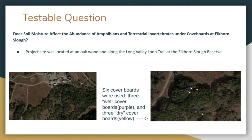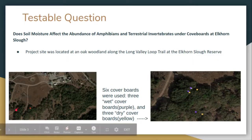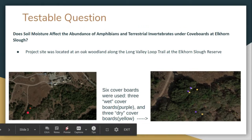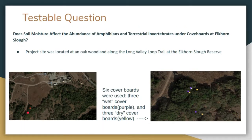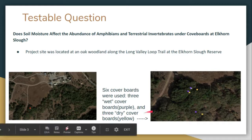Our project took place at an oak woodland along the Long Valley Loop Trail. More specifically, where the red dot is on the picture on the left. The coverboards were relatively close to each other, as shown in the picture on the right. The blue dots being the wet coverboards on the left side and the dry boards on the right side, the yellow dots.